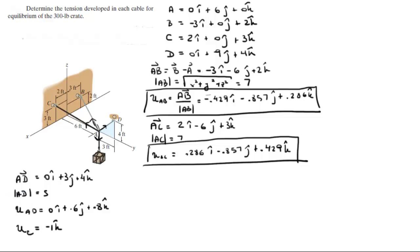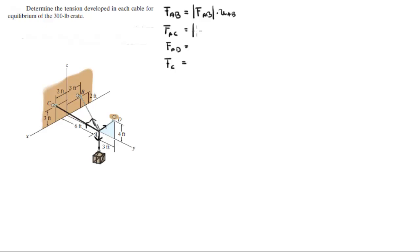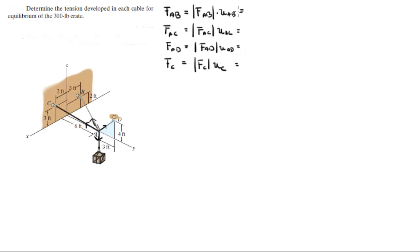Now that we have all the unit vectors, each force in Cartesian vector form is given by its magnitude times its unit vector. This applies for force AB, AC, AD, and the crate going straight down. FAC = FAC × unit vector AC, FAD = FAD × unit vector AD, and the crate force = FC × unit vector C (straight down).